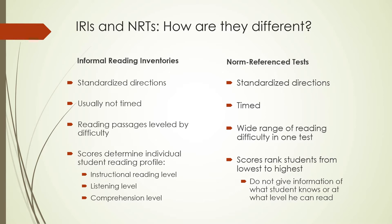In contrast to norm reference tests, IRIs are usually not timed. We do time students for reading rate, but other than that there's no timing, whereas norm reference tests are always timed — in order to find out how much students can do within a specified amount of time compared to others who have the same amount of time. In informal reading inventories, the reading passages are leveled by difficulty and designated as primer, first, second, etc. In norm reference tests, within any one test, there's a wide range of difficulty to see the top of reading achievement for each group.